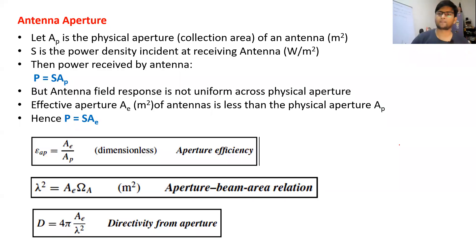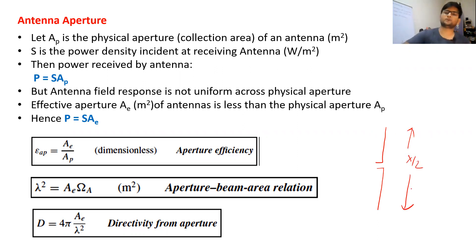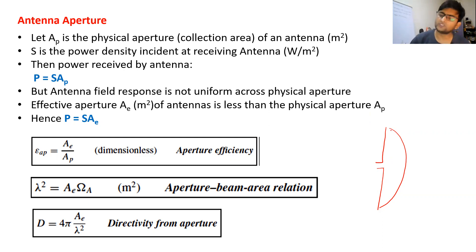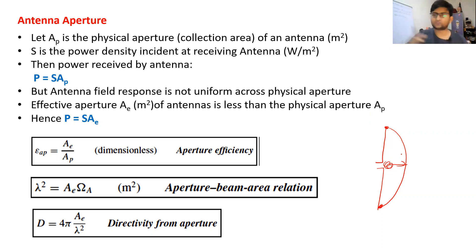Consider a half-wave dipole antenna whose length is lambda by two, where lambda is the wavelength of the operating frequency. At any time, the distribution of current is one half-wavelength of the full sinusoidal curve across the antenna. This means at the endpoints the current value is minimum, at the center point the current is maximum, and towards the ends it is minimum again. So the voltage and current distribution across the length of the antenna is always non-uniform.